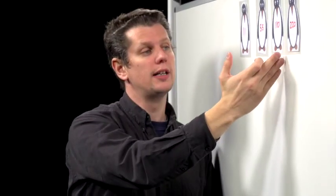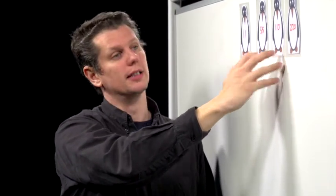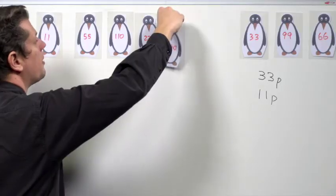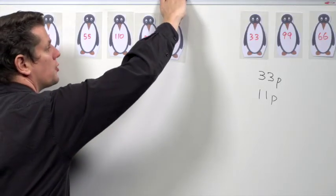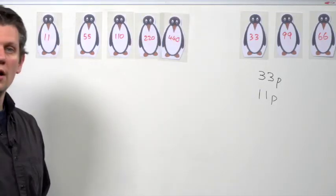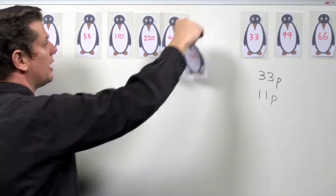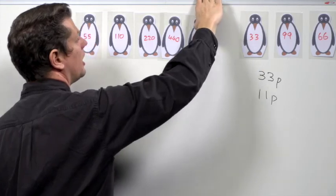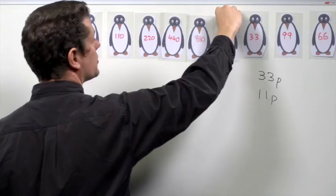Again, other penguins might join in here, but that doesn't matter. We care about the penguin that's going to be closest to 33. Similarly, the first penguin to join the queue behind 220 is 440. Then the first penguin to join immediately behind 440 is 880. And then the first penguin to join immediately behind 880 is 1760.